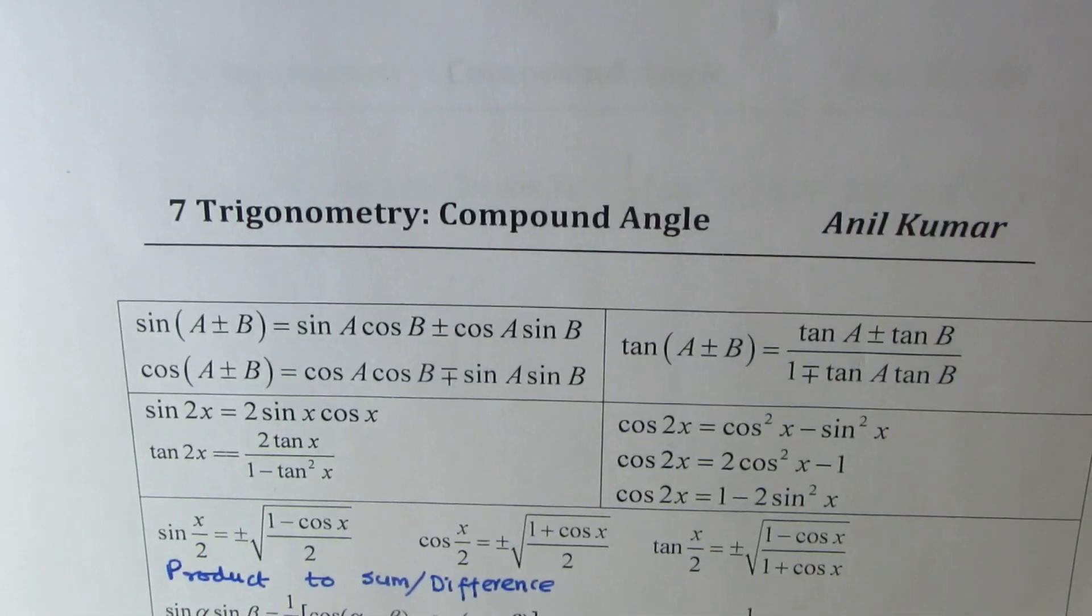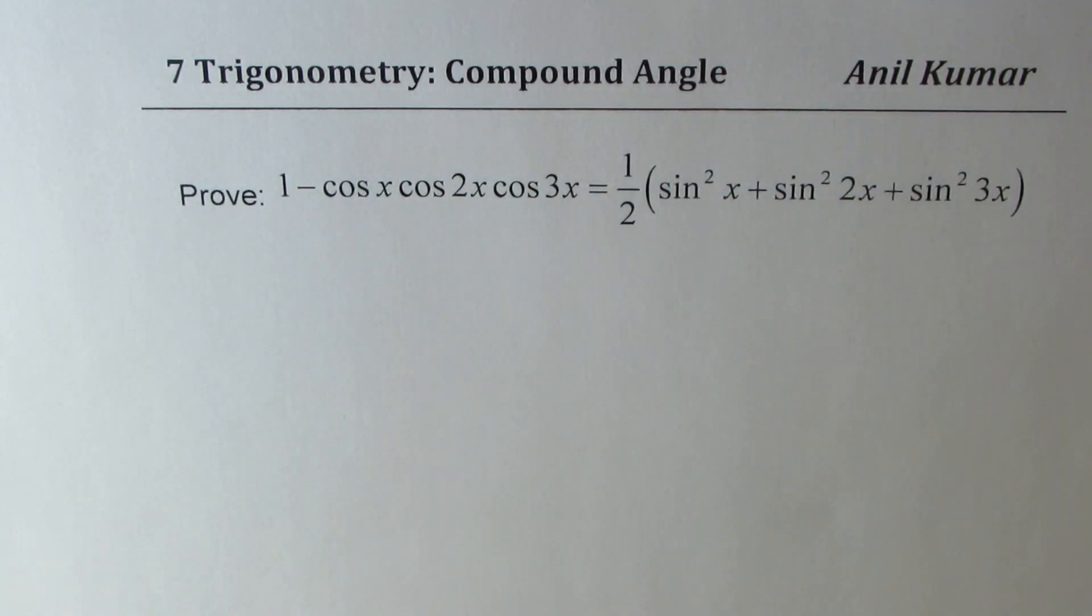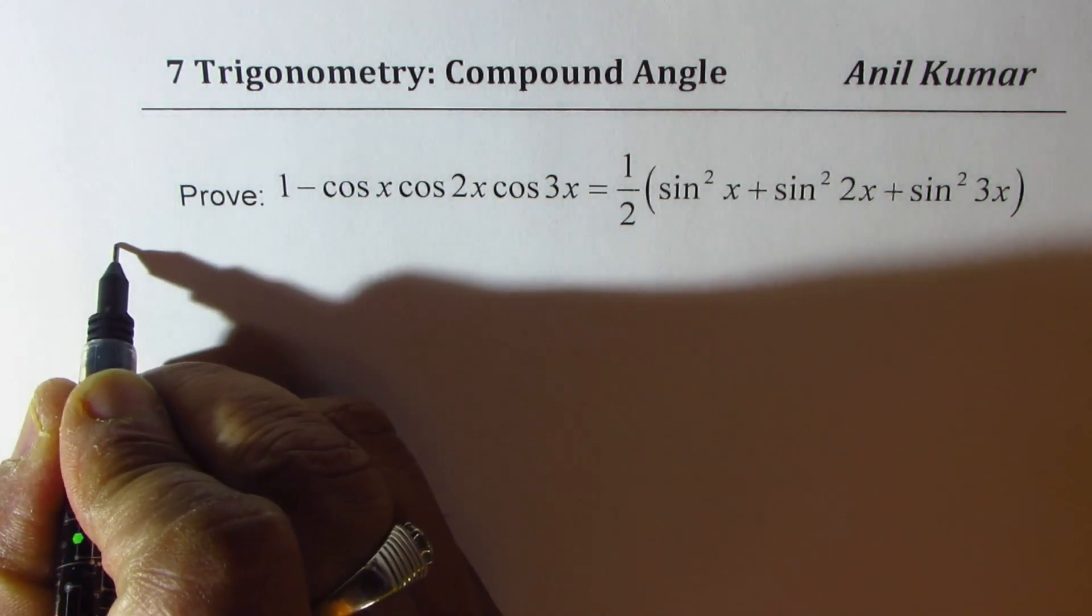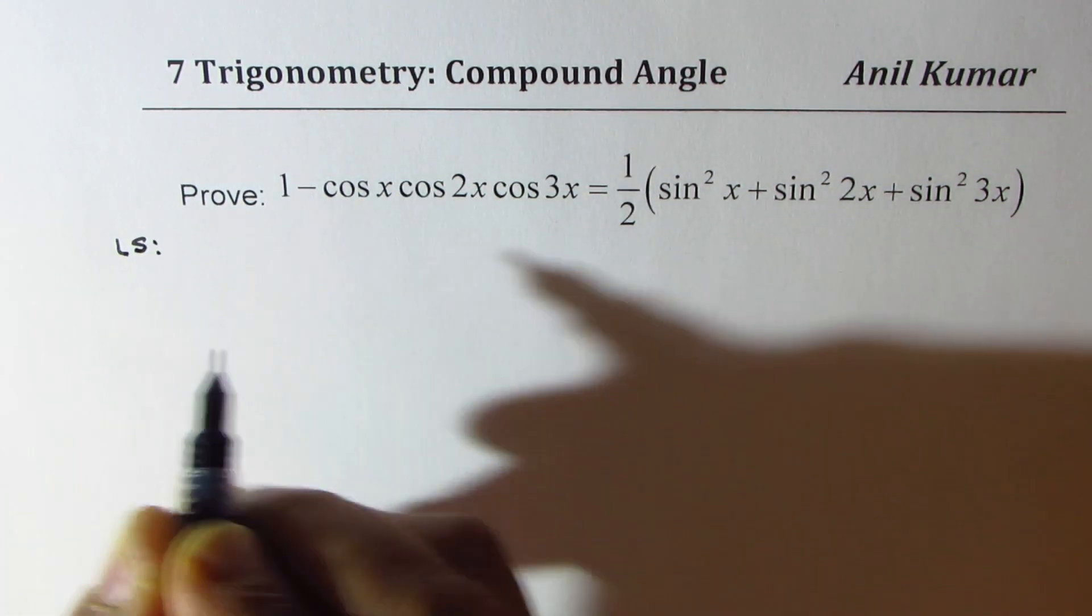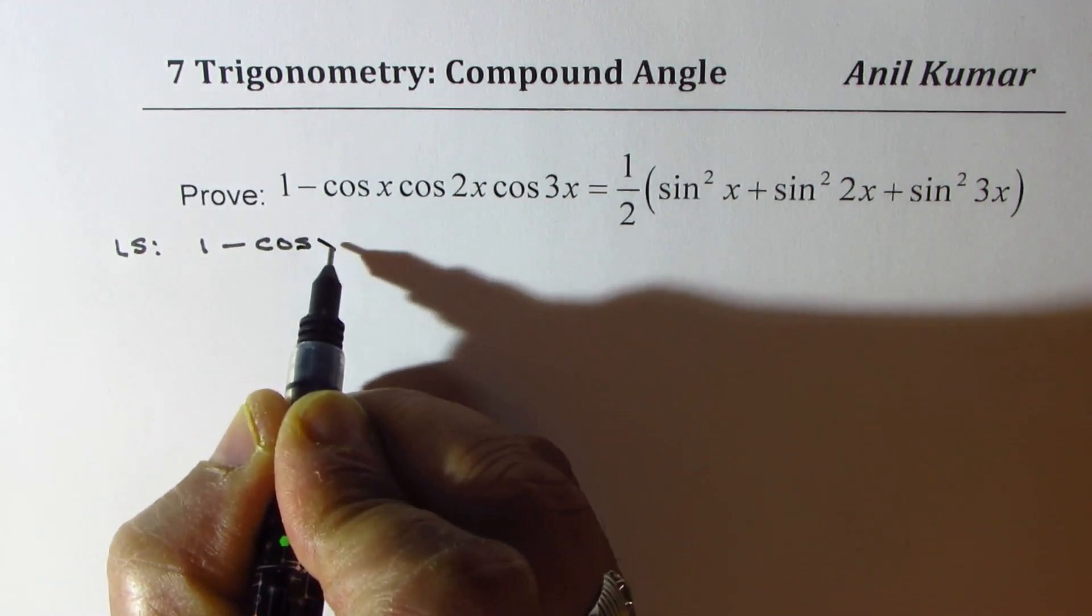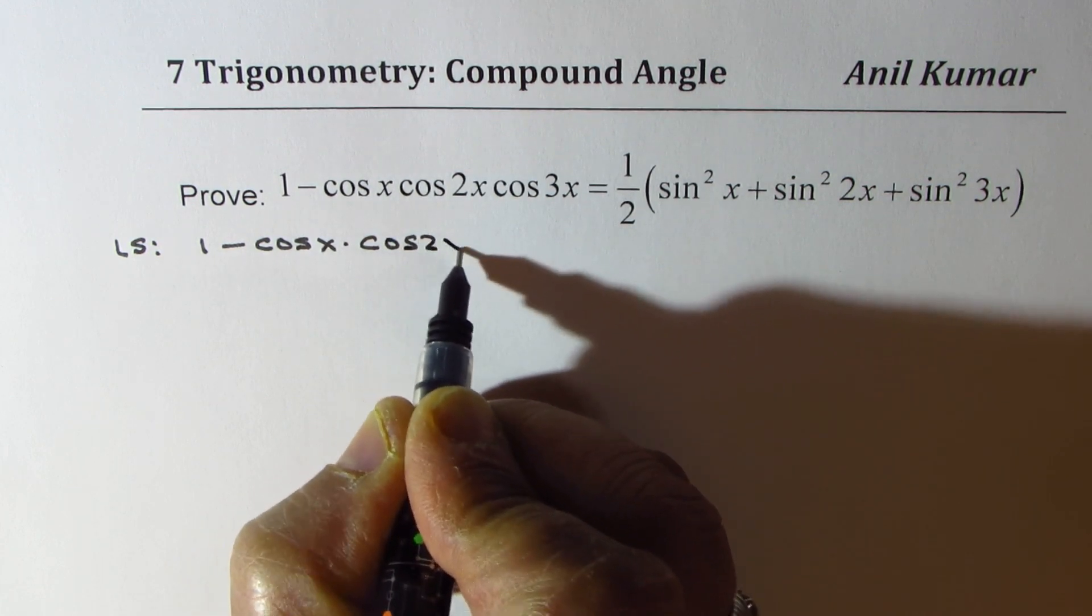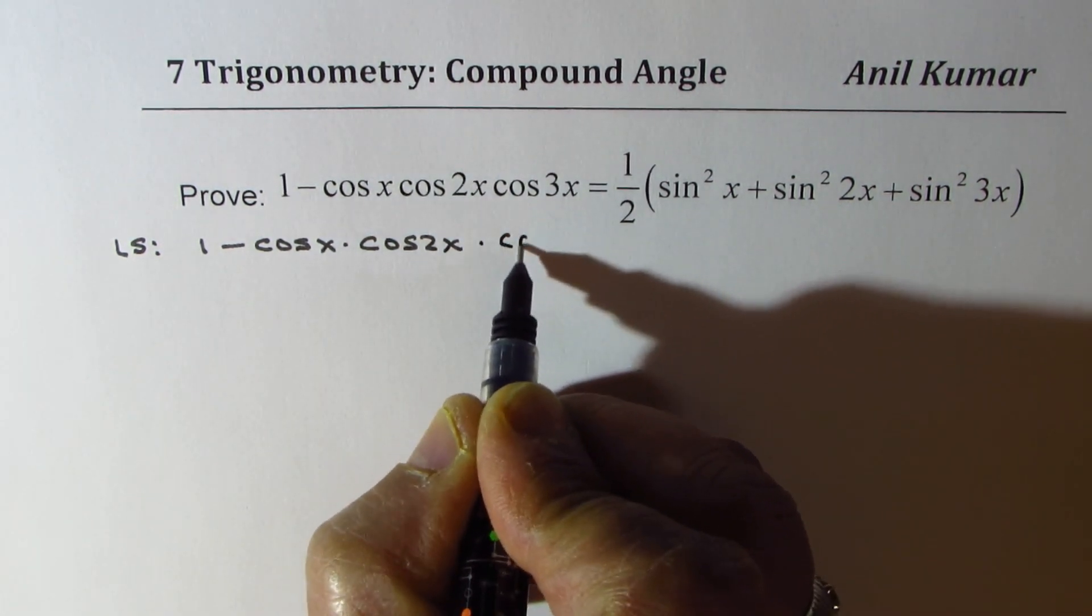Here is the list. So, I hope you remember. You can look into my videos for all the formulas that will help you to prove this identity. Let's begin with the left side. Left side for us is 1 minus cos x times cos 2x times cos 3x.